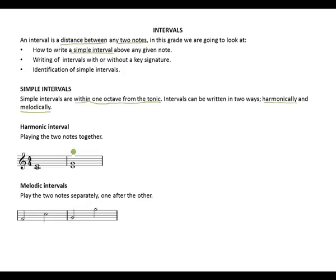Harmonic means playing two notes together — see examples: C and E is a harmonic interval, D to G playing the two notes together. Melodic means playing the two notes separately, one after the other. You start playing or singing one note then move to the next one — melodic, one after the other.